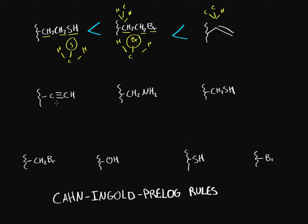Then we have an alkyne. Just like with the alkene, instead of having a hydrogen and two carbons, now it's one carbon and two extra pi bonds — as if it has two other carbons. And the same goes for the other end of the alkyne carbon: it's as if that carbon also has three carbon bonds. So these double bonds and triple bonds make a big difference in ranking.